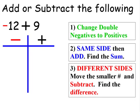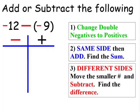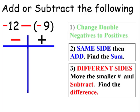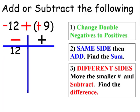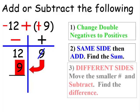Negative 12 plus 9: 12 is negative, so it goes underneath the negative side. The 9 is positive, so it goes underneath the positive side. Since they're on different sides, we'll move the smaller number over and subtract. 12 minus 9 is 3, and since we're underneath the negative side, it'll be negative 3. Negative 12 minus a negative 9: we have a double negative, so we change it to positive. Now it reads as negative 12 plus 9. 12 is negative, 9 is positive — different sides, so we subtract. 12 minus 9 is 3, and it's negative because it's underneath the negative side.